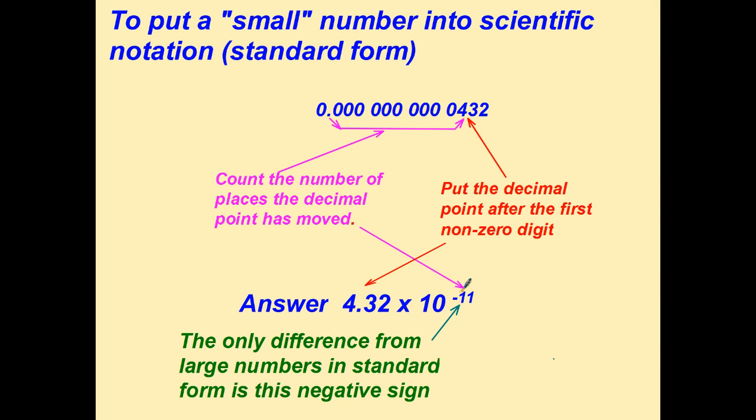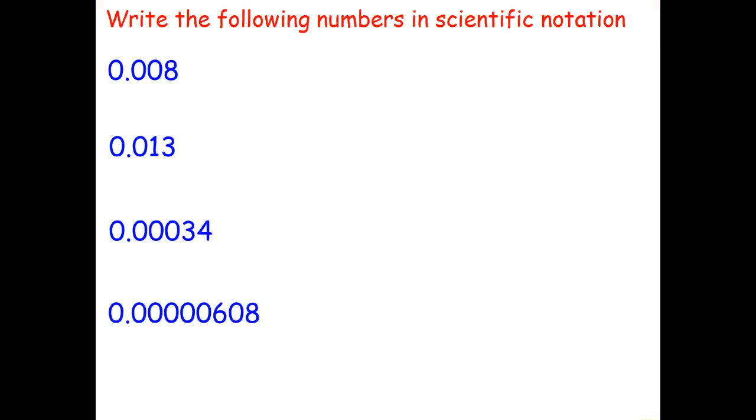Now one thing to be careful of: students like to count zeros. A lot of students will go three, six, nine, ten zeros and write it as 4.32 times 10 to the negative 10. It's not the number of zeros between the decimal point and the first non-zero digit, it's how far you move the decimal place. Or if you want to count zeros, just add one on to your answer, so 10 zeros, one more makes it 10 to the negative 11.